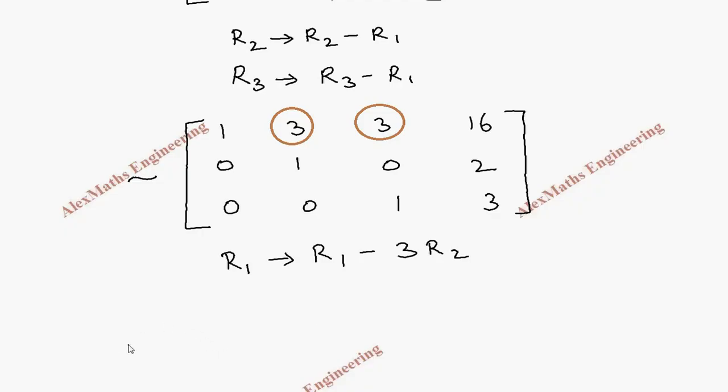So this augmented matrix will become 1 minus 3 times of r2 is 1 only because this is 0. 3 minus 3 is 0. 3 minus 0 is 3 only. 16 minus 6, which is 10.